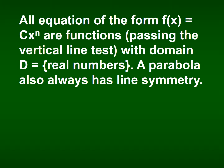An equation of the form f of x equals c times x to the n — the power functions — will always pass the vertical line test, so you always have a function. The domain is always all real numbers. The range sometimes is all real numbers, and sometimes it has a limitation such as greater than zero or less than zero, and that depends on whether your power function is a parabola.